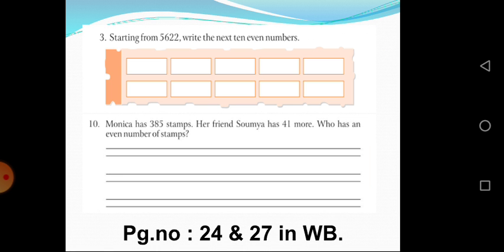Next, page number 24 and 27 in your workbook, question number 3: Starting from 5622, write the next 10 Even Numbers. You have to write starting from 5622 and write the next 10 Even Numbers.